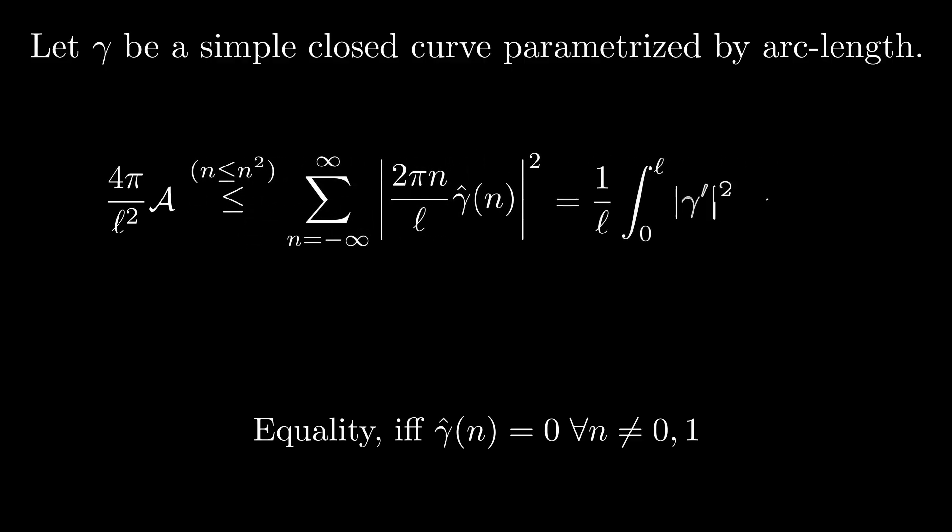By applying Parseval's theorem again, we can rewrite the sum as an integral. As the curve is parametrized by arc length, the term in the integral is always 1, so the integral equals l. Rearranging this gives us the isoperimetric inequality.